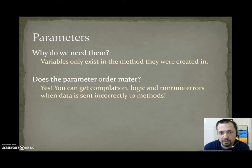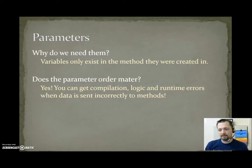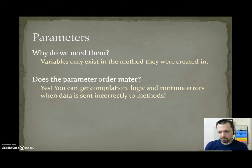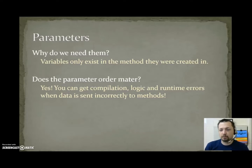When we look at the parameter rule, after the method name we have parameters — you could have several. For example, base comma exponent calculates power. You might be wondering: does parameter order matter? Yes. As you realize with math.pow, if you were trying to calculate 2 to the 5th, which is 32, you would do math.pow(2, 5). If you changed the order and did math.pow(5, 2), your result would be 25 instead of 32, because it would be 5 to the power of 2. So parameter order is very important. If you mess up your parameter order when calling a method, you can get a compilation, logic, or runtime error when the data is sent incorrectly to methods.